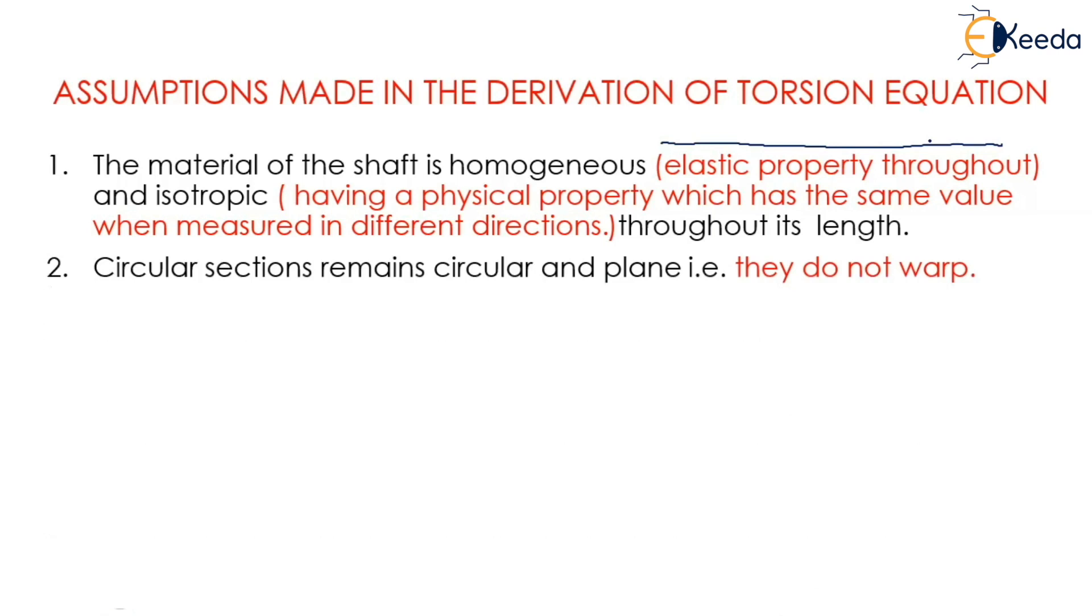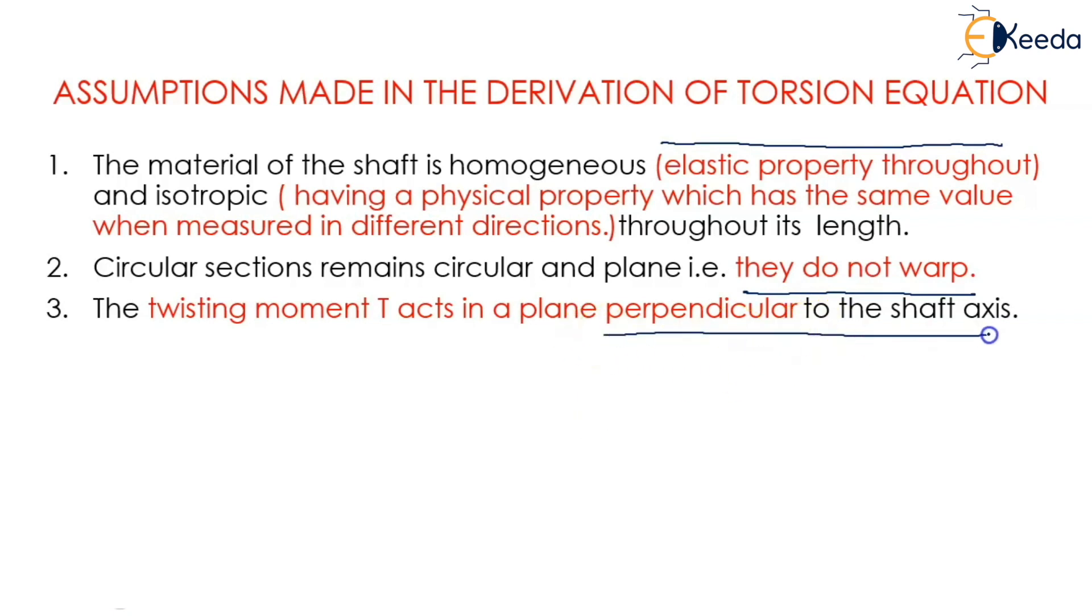Circular sections remain circular and plane, that is, they do not warp. This is the most important term to understand - the shaft does not warp. The twisting moment T acts in a plane perpendicular to the shaft axis. At any section, the radial lines remain straight.